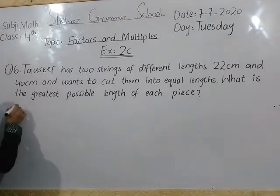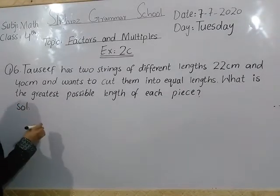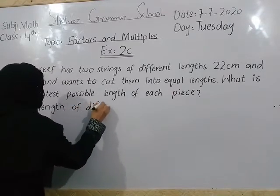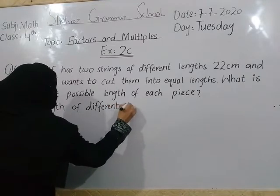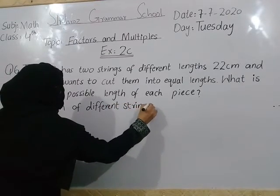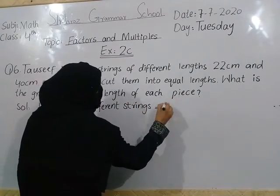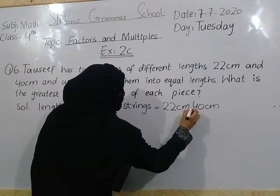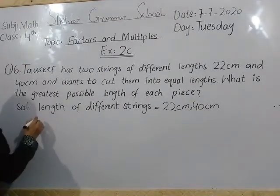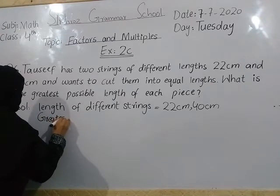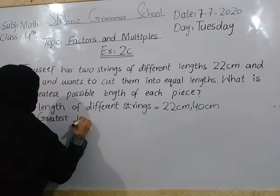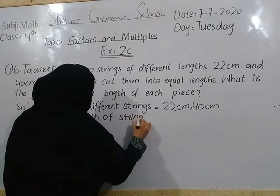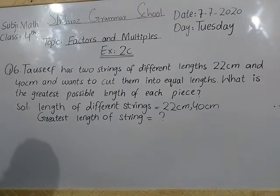Solution, students. We have two strings of different lengths — one is 22 cm and the other is 40 cm. We will find the greatest length of the string.